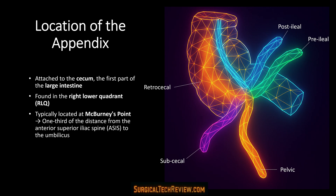The appendix is attached to the cecum in the right lower quadrant, often at McBurney's point — one-third of the way from the anterior superior iliac spine to the umbilicus.